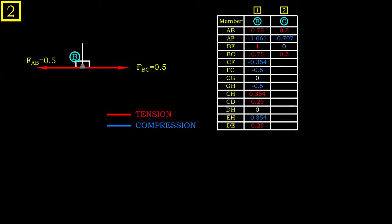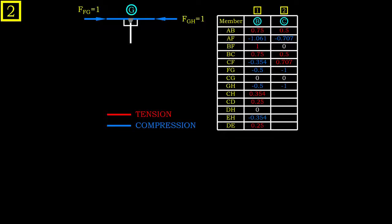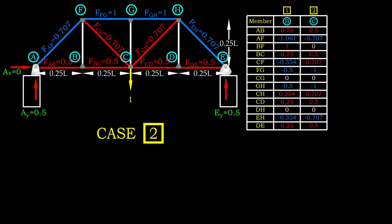However, this time we do not have to go through all the joints. Since the structure is symmetrical, we can simply mirror the result we obtain for any half of the truss structure.